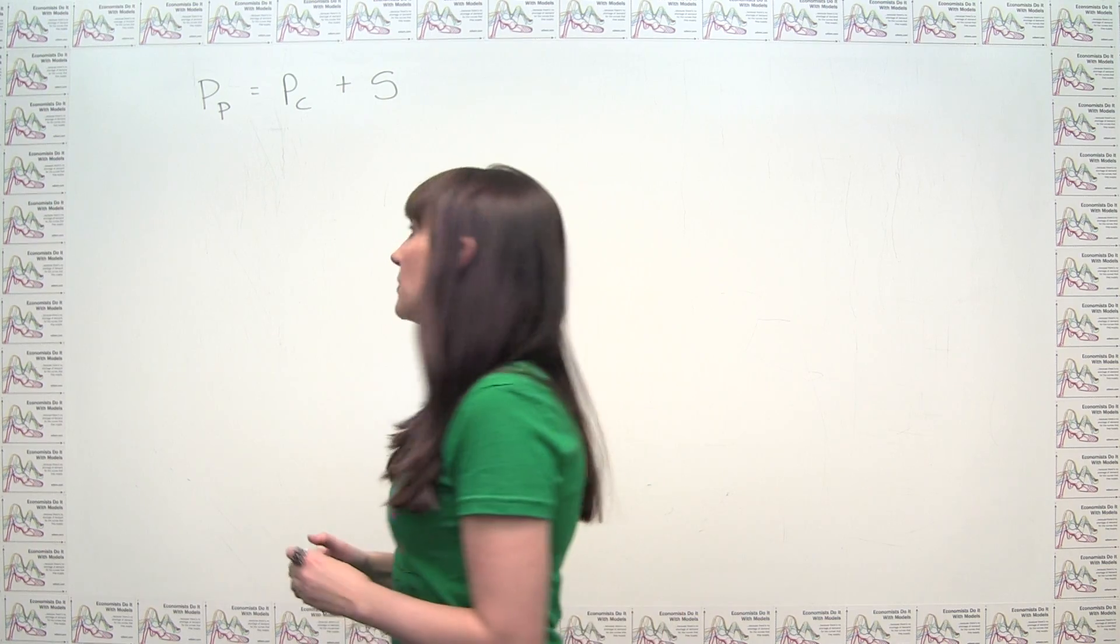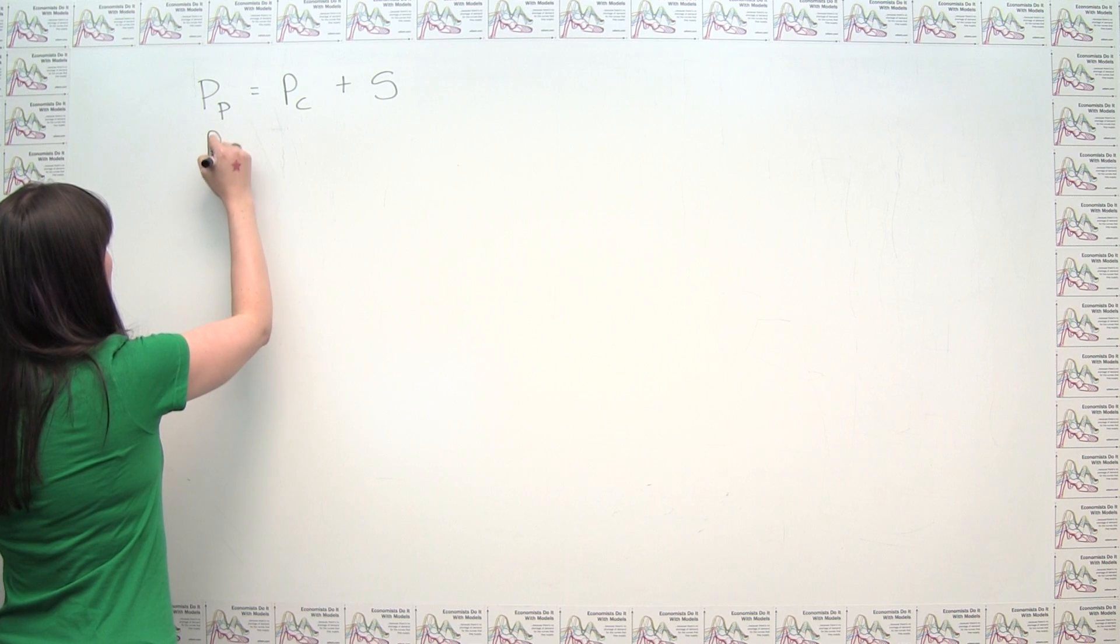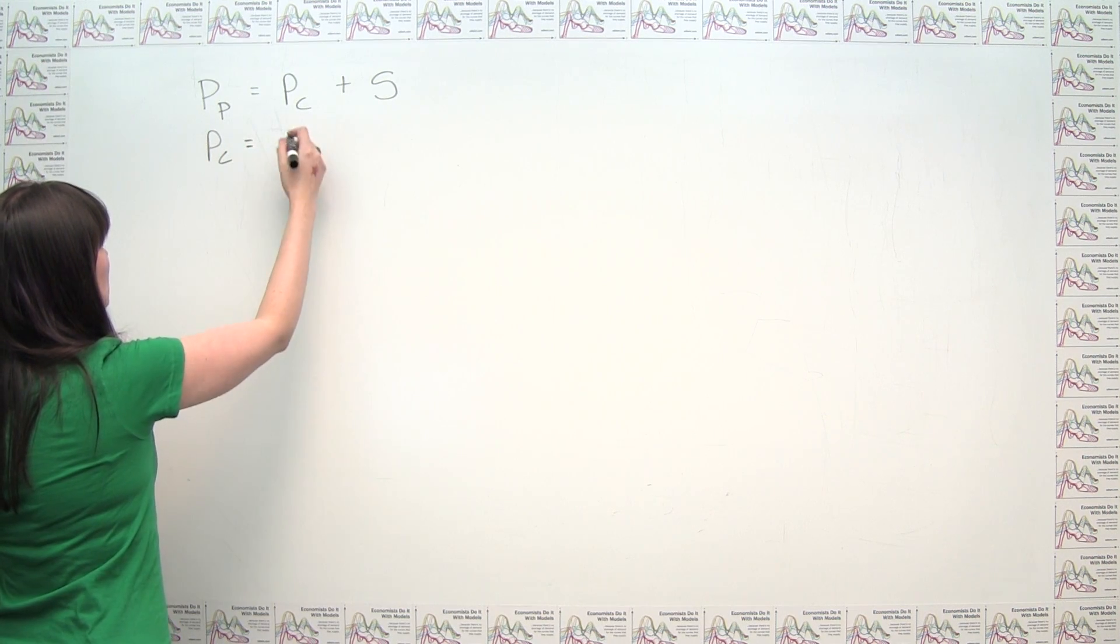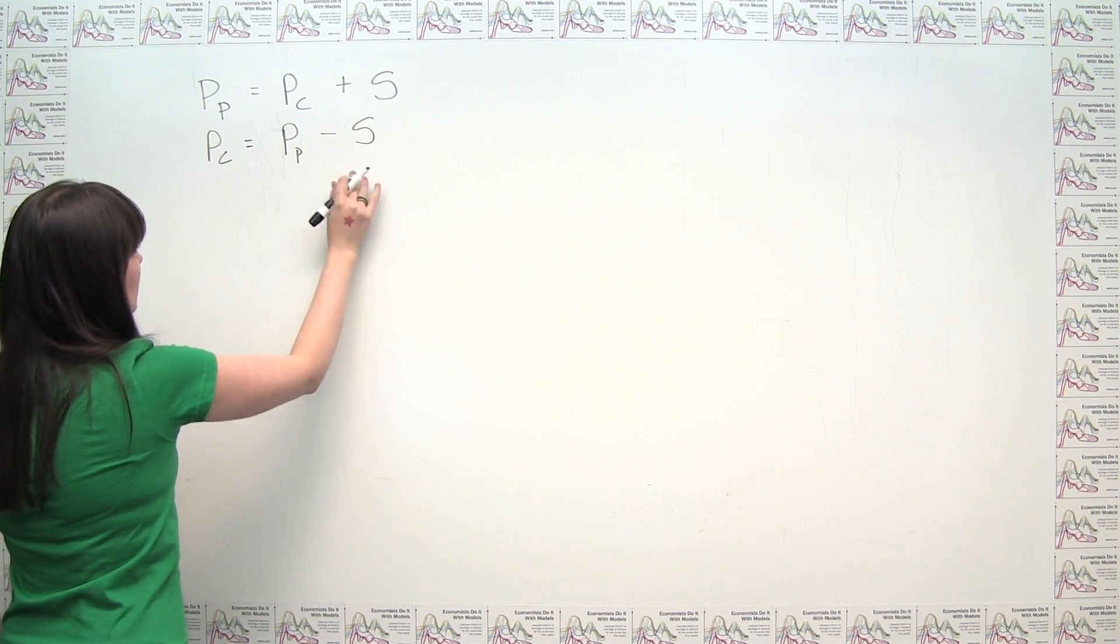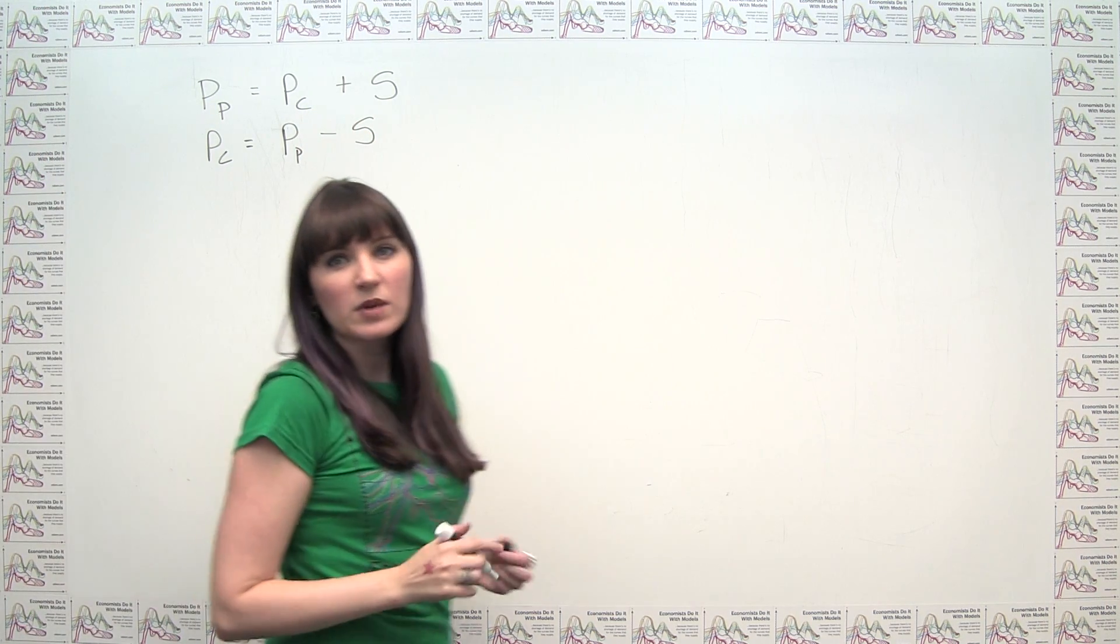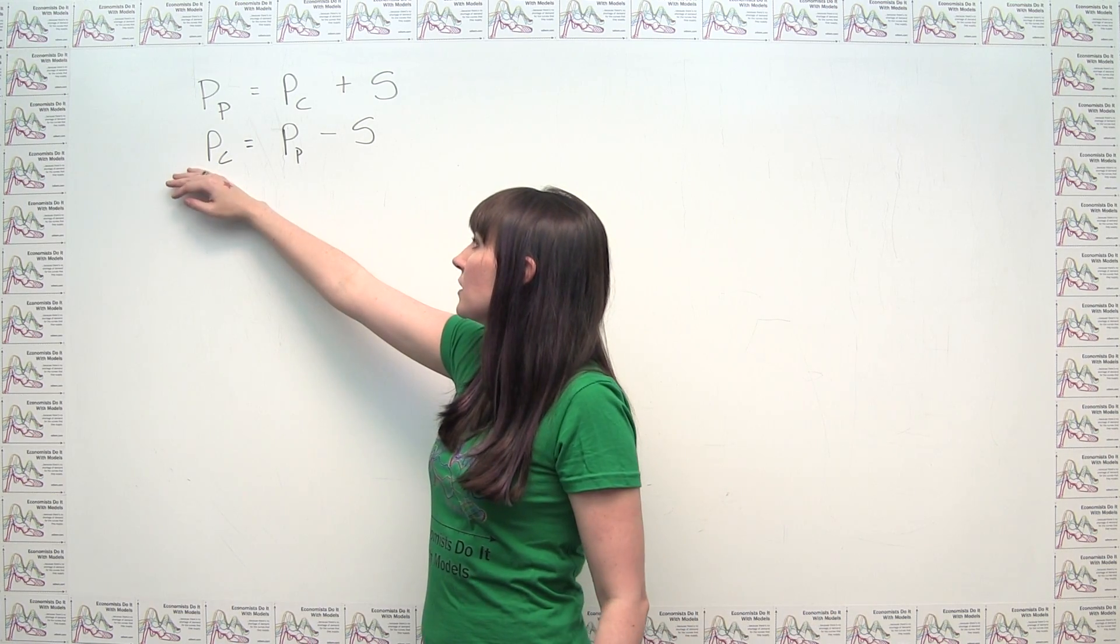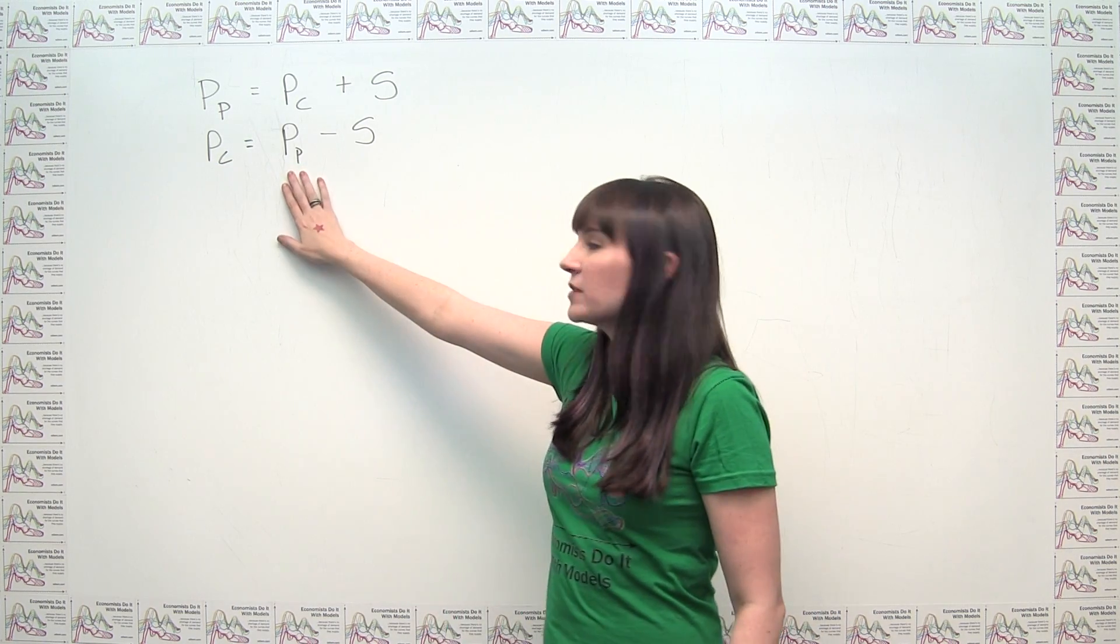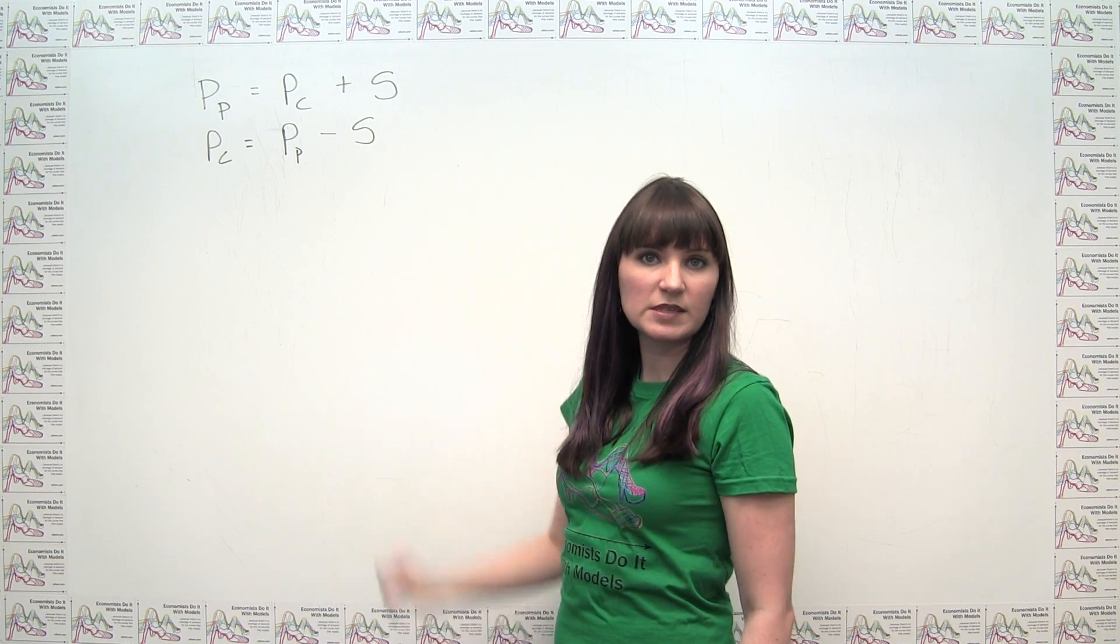Equivalently, we can do some simple algebra and we could say that it must be the case that the price of the consumer is equal to what the producer gets to keep minus the amount of the subsidy. And we could frame this as the consumer paying out of pocket the producer's price for this item, but then getting a rebate from the government equivalent to the amount of the subsidy.